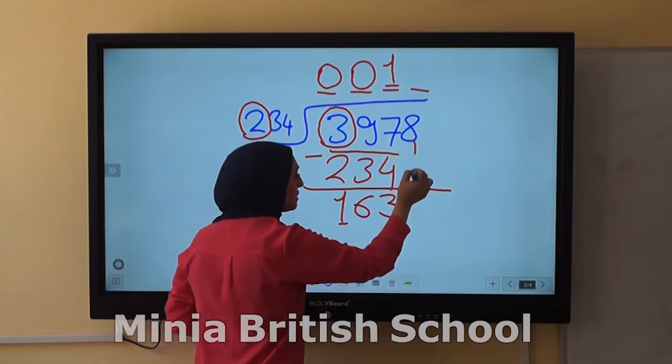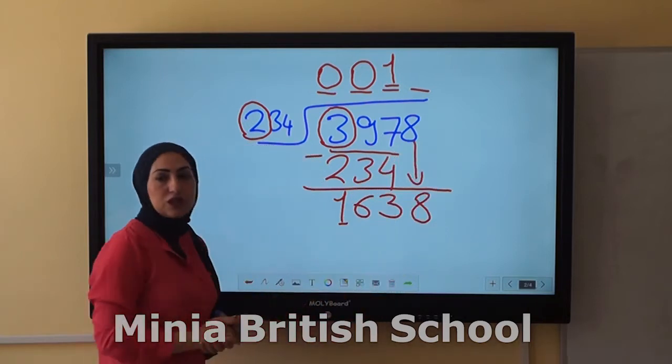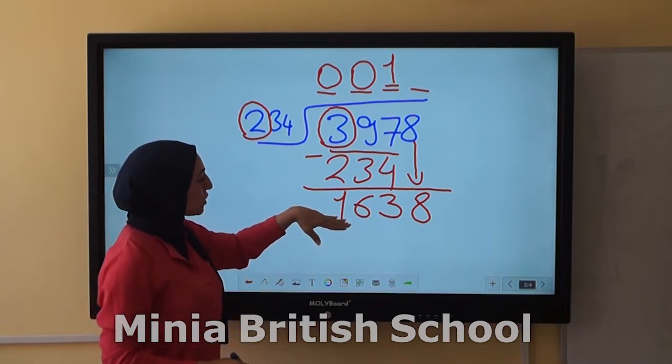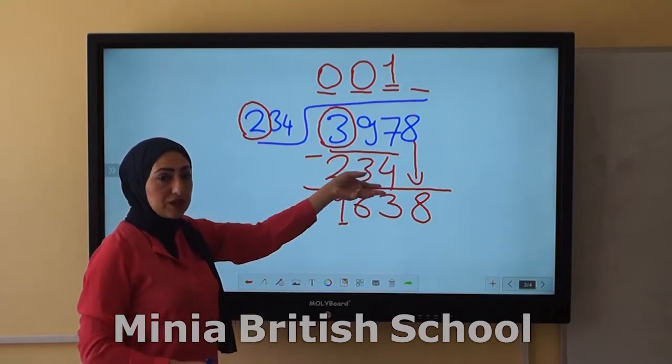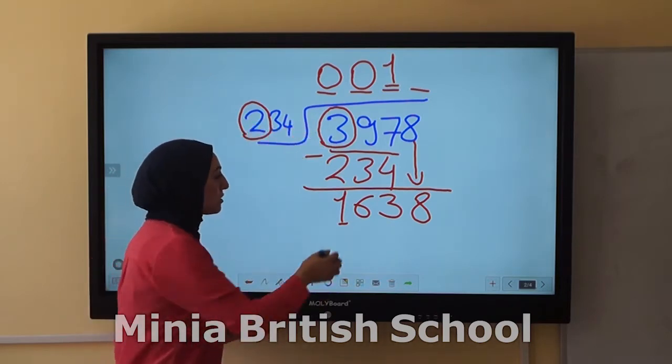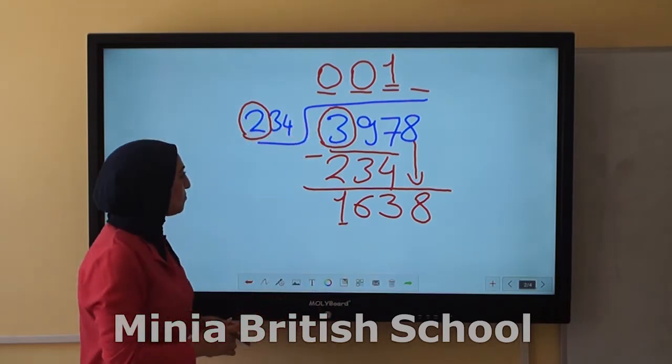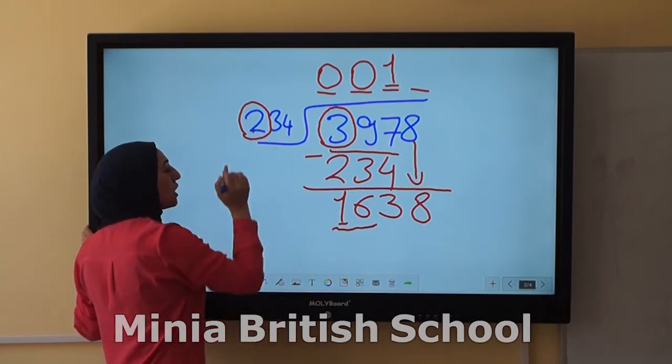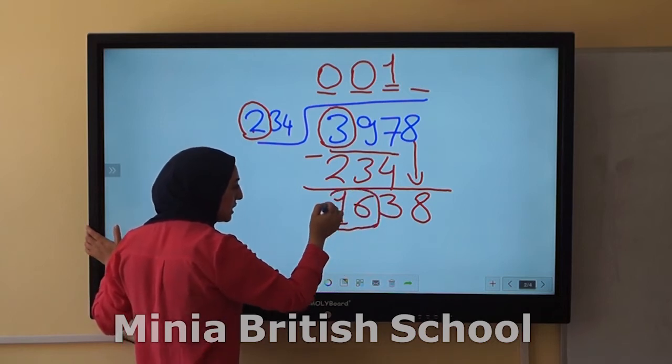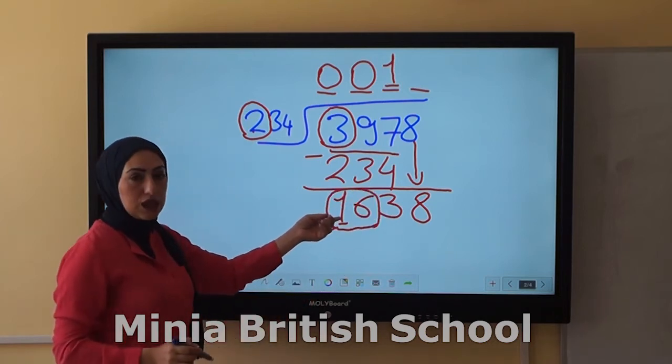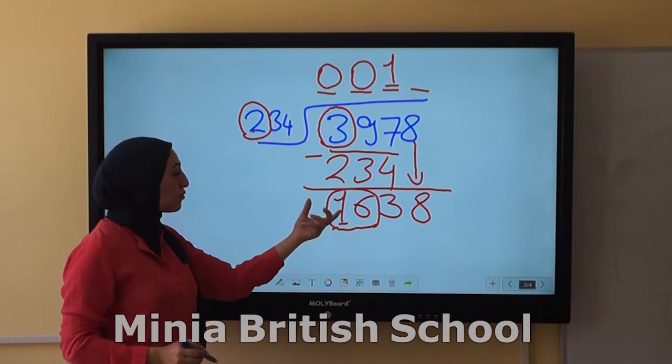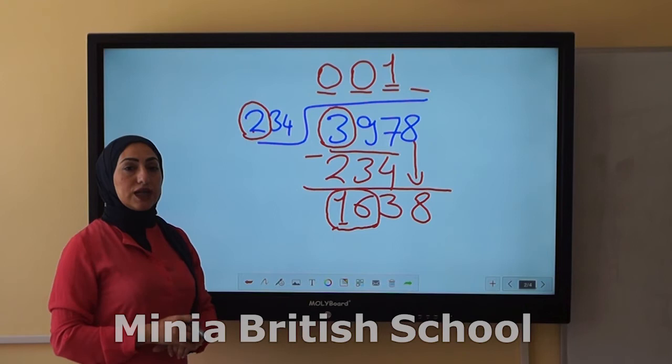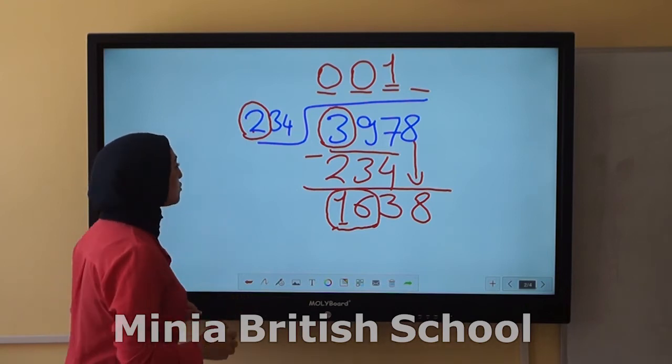I write 1. 1 times 234, of course, it's the same number here, and subtract it. 7 minus 4 equals 3, 9 minus 3 equals 6, and 3 minus 2 equals 1. Then drop the next digit here. So this number, of course, 163 is more than this number, so I take this number here. Next, 16 divided by 2. I take the 2 digits here, because the first one is more than two digits. 16 divided by 2 equals what? 8. So let's try this one.